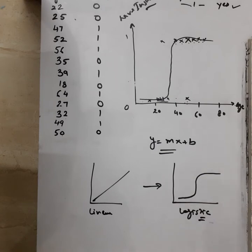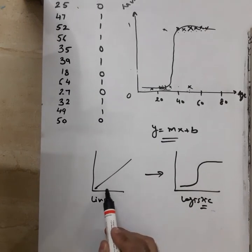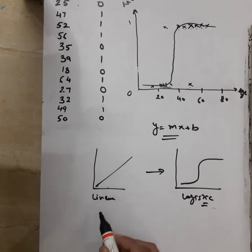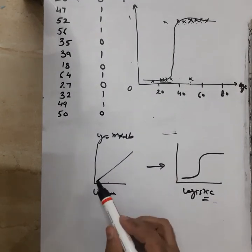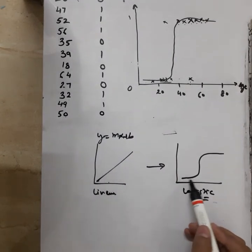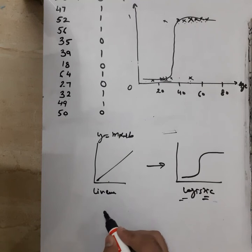Logistic regression helps us predict better results rather than linear regression in problems where we have to classify between two classes — yes or no — or maybe multiple classes as well. The idea is: how can we convert this straight line into this S-shaped curve? We can do this using a function. For linear regression this is the equation that works behind it, and for logistic regression we convert our line into something that fits this problem and gives better results.